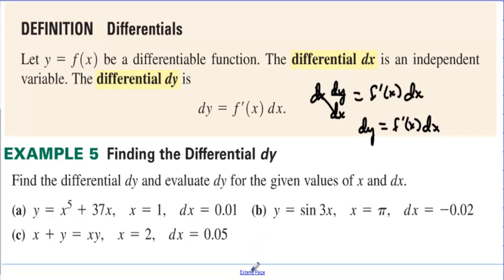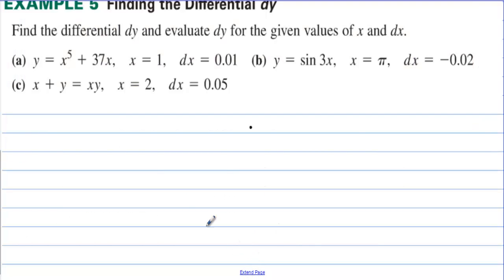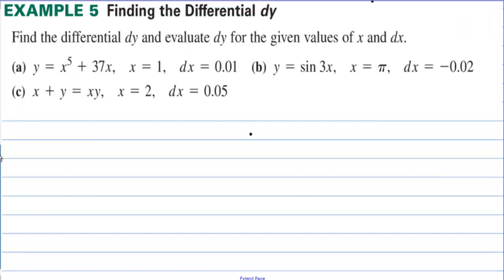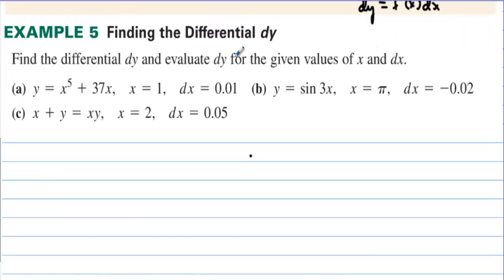Find the differential dy. Find the differential dy and evaluate dy for the given values of x and dx. So, we have letter a. The function is x to the fifth plus 37x. X is equal to 1, so we're looking at this at x equals 1, and they're saying that the small change in x is 0.01.